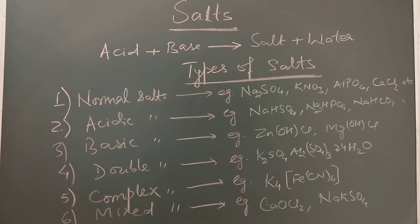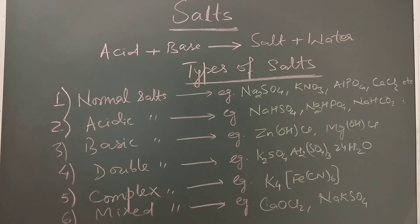Next in the list is double salts. Double salts are formed by combination of two simple salts, like potassium alum: K₂SO₄·Al₂(SO₄)₃·24H₂O. Other examples of double salts are Mohr's salt: FeSO₄·(NH₄)₂SO₄·6H₂O, and carnallite: KCl·MgCl₂·6H₂O. These are the examples of double salt.